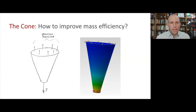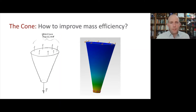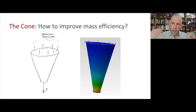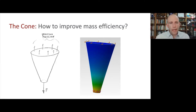What you probably noticed is that the stress varies strongly as you move along this component. Up here it's pretty low — the blue color corresponds to a pretty low stress. At the bottom, red corresponds to a much higher stress. So in a well-designed, mass-efficient part, the stress should be relatively even. Is there a way we can remove some material at the top to get a more even stress distribution?